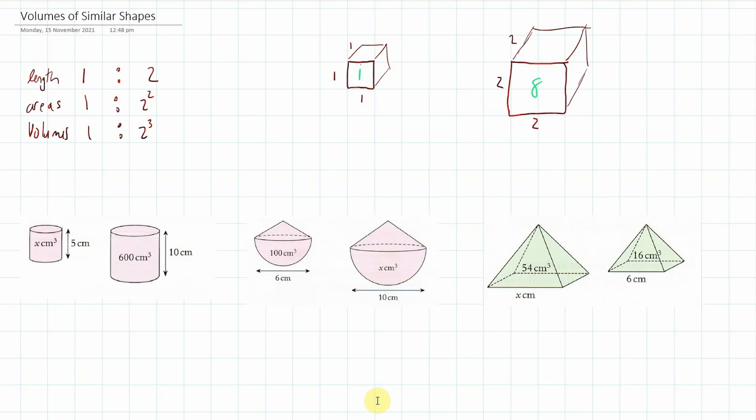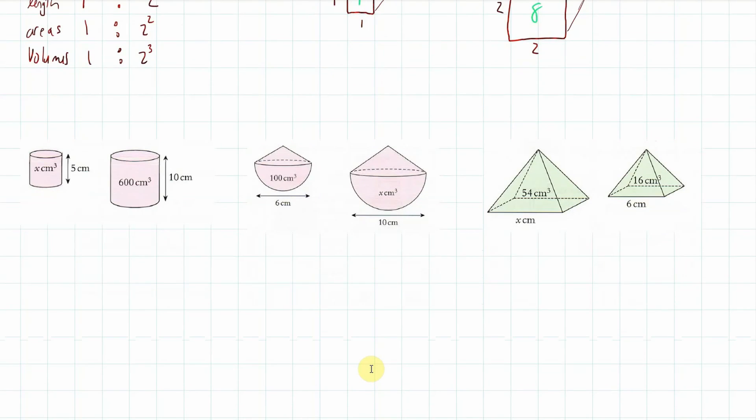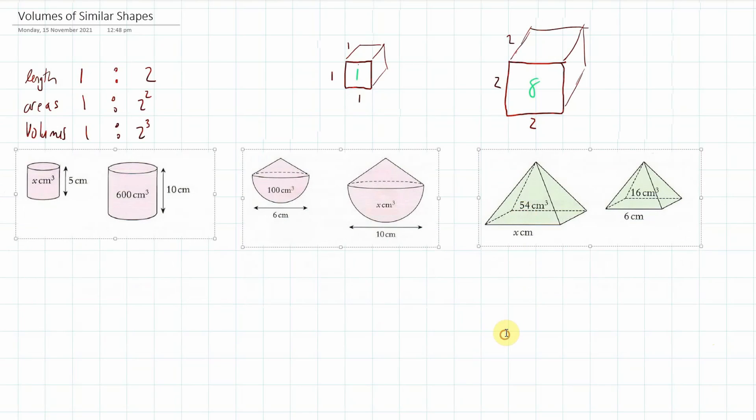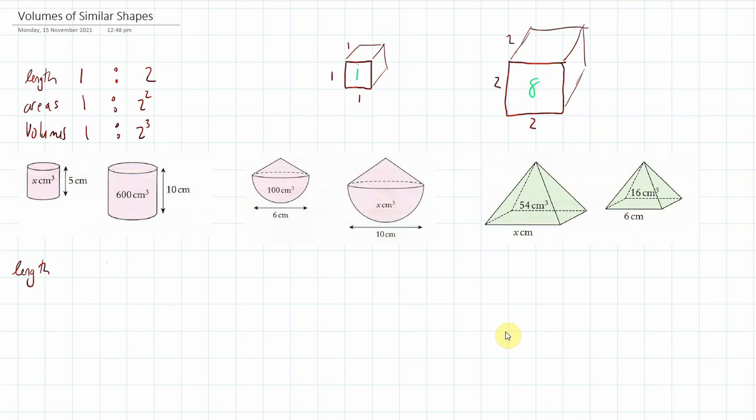Now let's get right into the exercise. So we've got a small one. It's x to 600. Let's do the lengths first. The ratio of lengths is 5 to 10, which is the same as 1 to 2. And therefore, the volumes ratio should be 1 cubed to 2 cubed, which is actually 1 to 8.